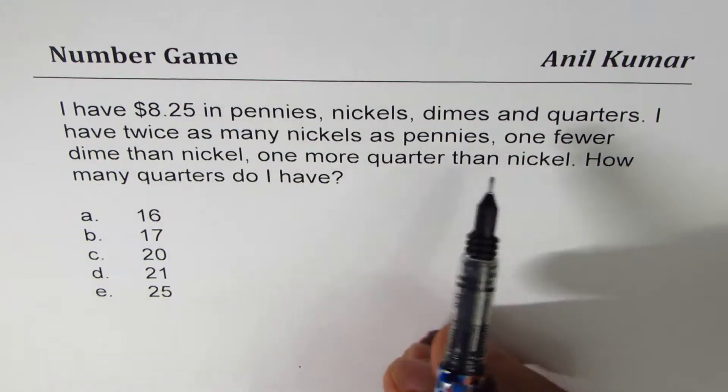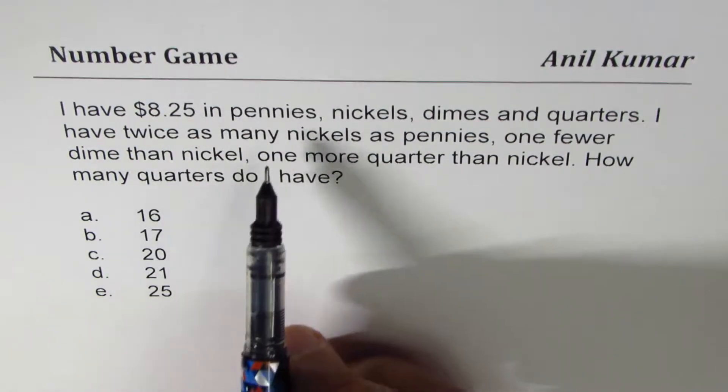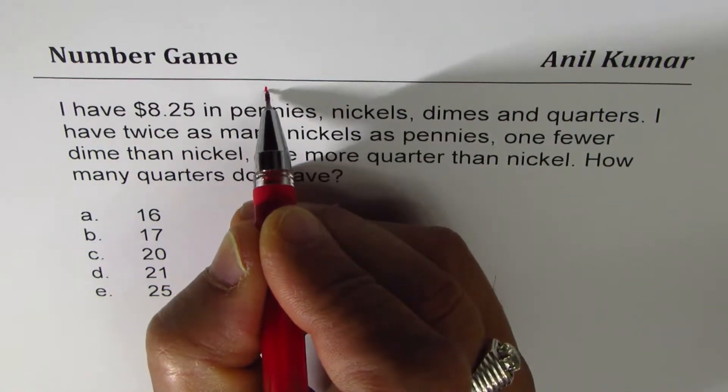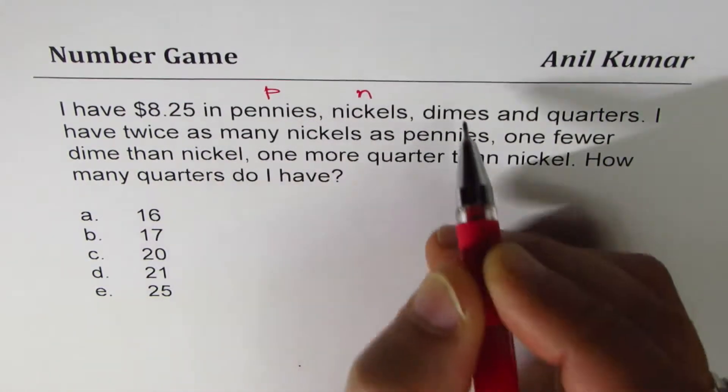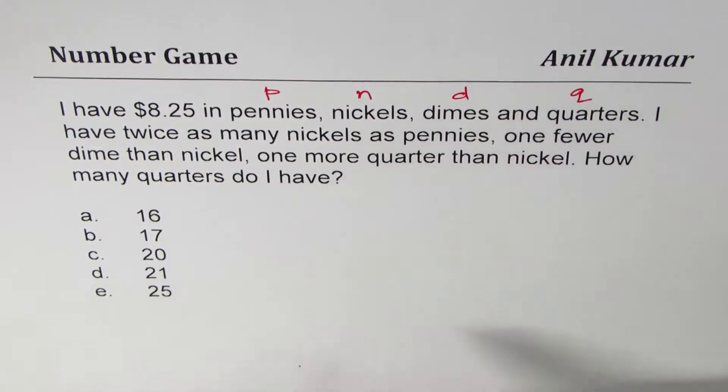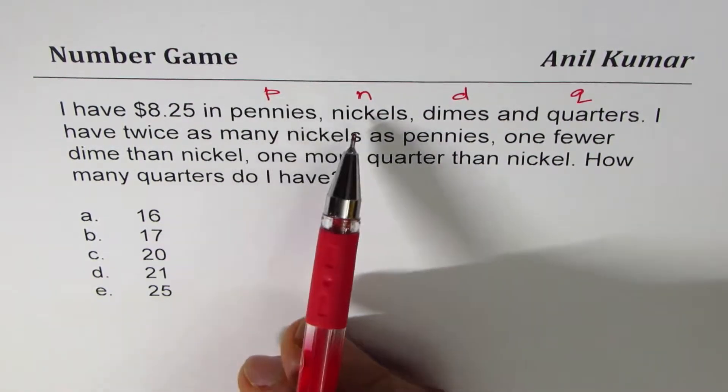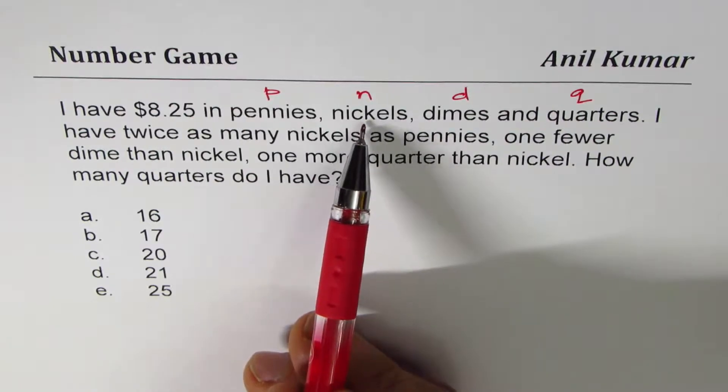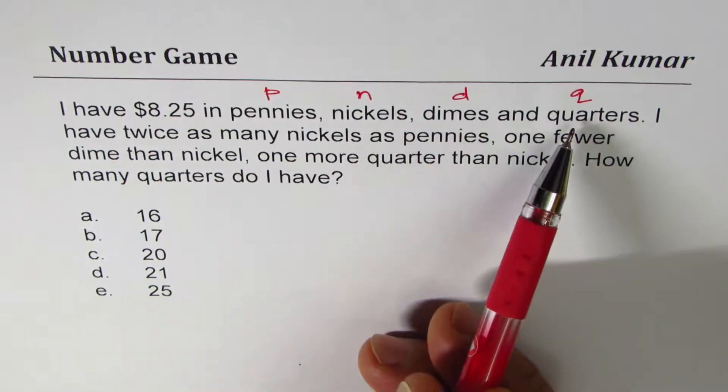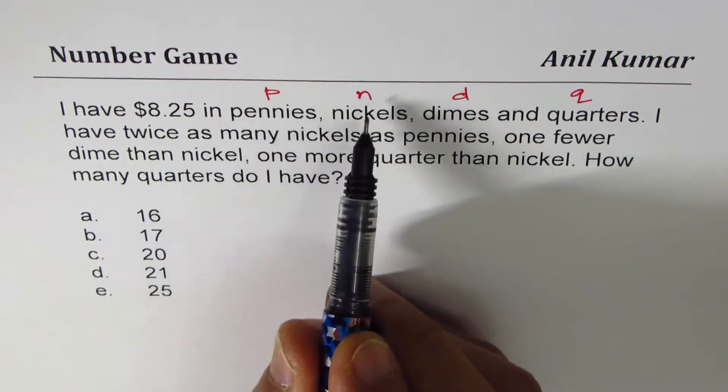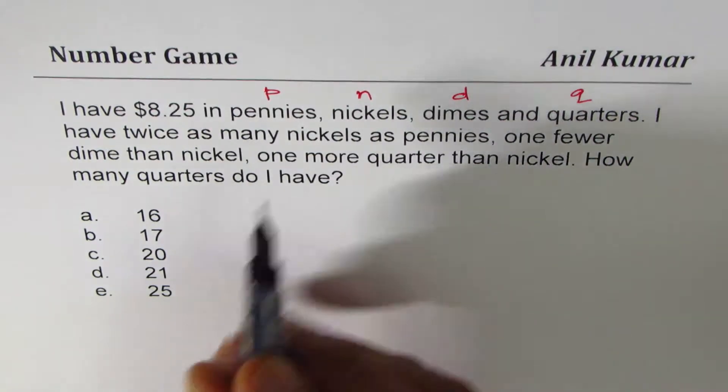Total money value is $8.25. Let's represent P for pennies, N for nickels, D for dimes and Q for quarters. As you know, value for penny is $0.01, nickel is $0.05, dime is $0.10 and quarters is $0.25. The total money, if we have P pennies, N nickels, D dimes and Q quarters will be...